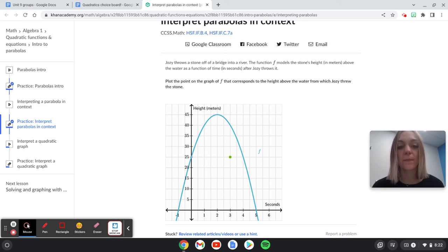Plot the point on the graph of f that corresponds to the height above water from which Josie threw the stone. So just thinking when time is zero, this is when she throws the stone. So it starts here, it goes up and eventually it goes down and then it hits the river.